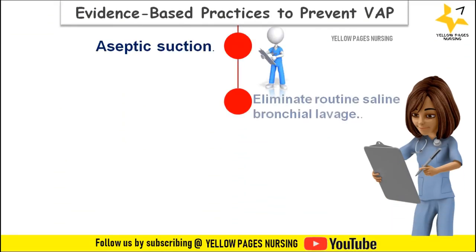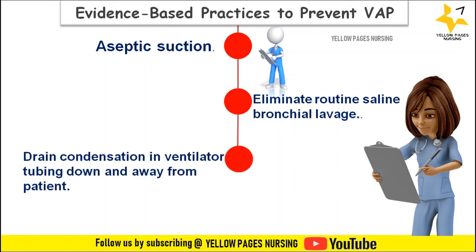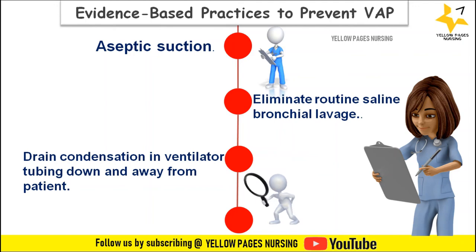Next comes aseptic suctioning. Suctioning should be done only if there is a proper indication, because suctioning can also contribute to VAP. Next, eliminate routine saline bronchial lavage because bacteria may dislodge from one area to another. Next, drain condensation in ventilator tubing down and away from the patient.